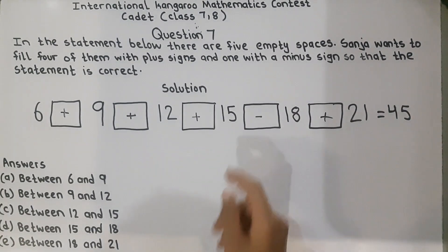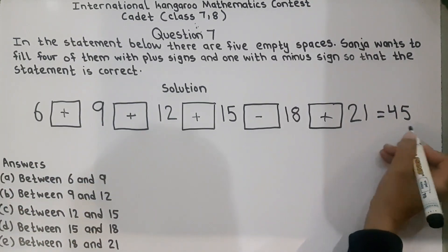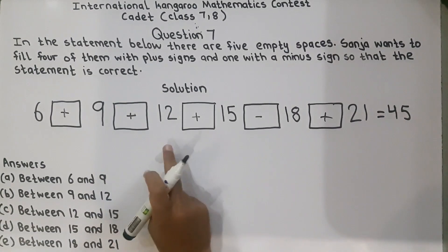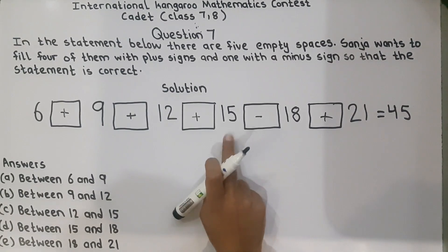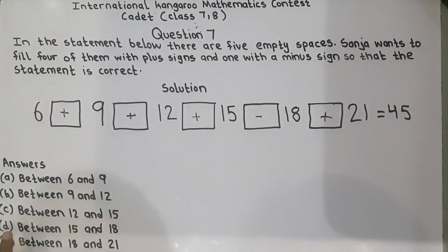If we plus and minus this, the answer equals 45. So it means we have put the minus in its right place. We have put the minus between 15 and 18. So we have put the minus sign here. So our question is solved, it was a very easy one.